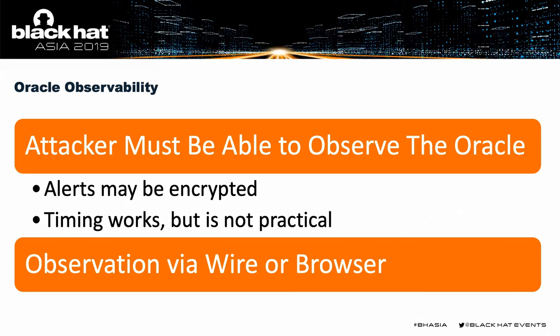There is a caveat: the attacker has to be able to actually observe what's going on at the server. If the server is responding differently to different broken messages, it only matters if those differences are visible to the attacker. Encrypted TLS alerts are not necessarily distinguishable readily, though through some browser tricks it might be possible. Timing attacks like Lucky 13 work, but they're not the most practical over the internet due to latency fluctuation. Generally, if the attacker can observe the change by sniffing on the wire or being within the victim's browser, there's potential for this attack.